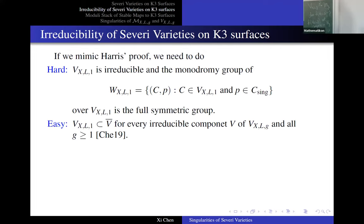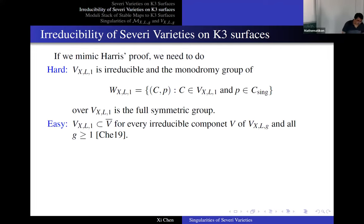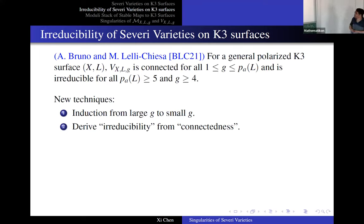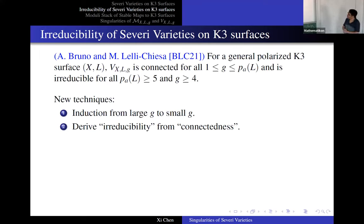The second statement is now easy, but the first becomes hard — it's a reverse situation compared to Harris for plane curves. What can we do? We don't have an easy base case. A recent paper by Bruno and Lelli-Chiesa proves that for a very general K3 surface, the variety is connected for all g, and irreducible for large g. They solve almost everything, with the remaining case being g less than three. There are still some gaps, but they introduce a lot of new technique.